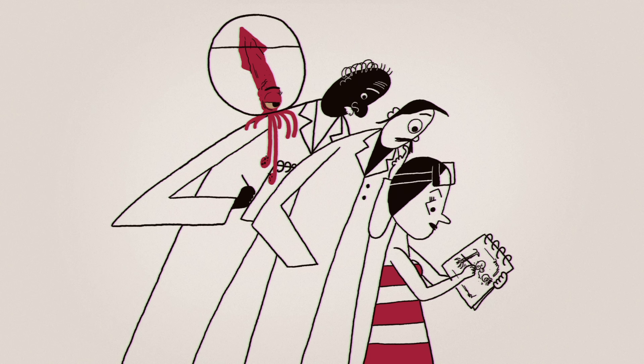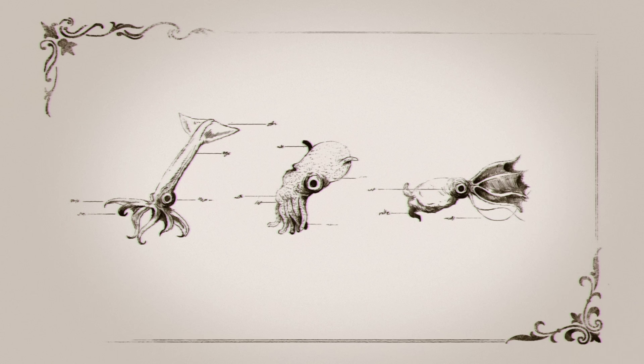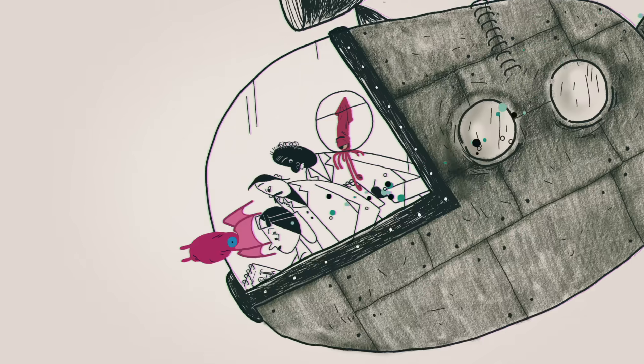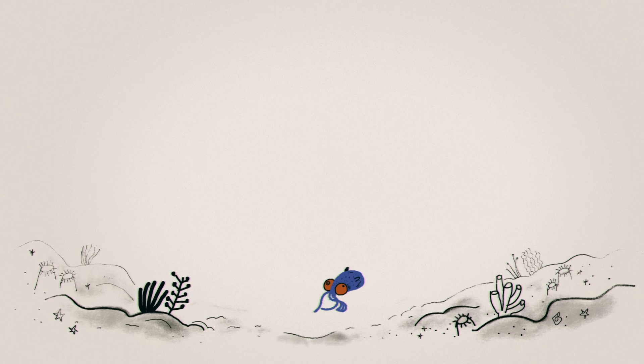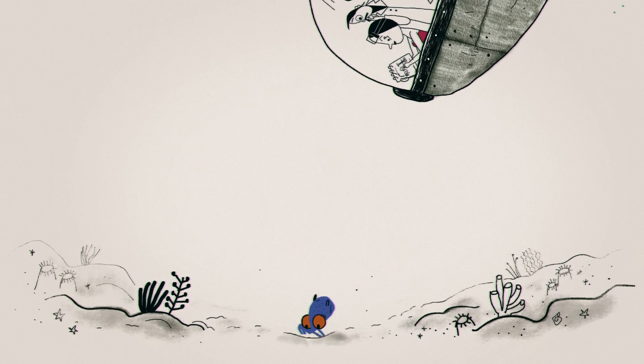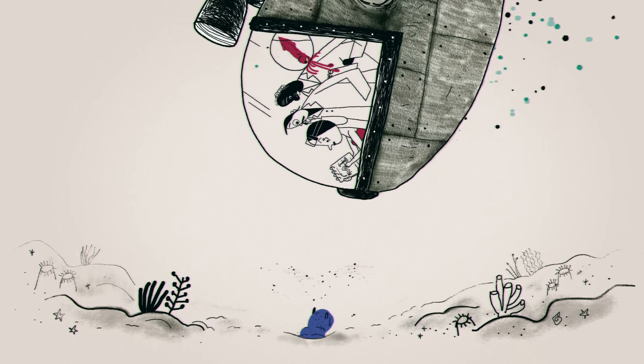Some squid species have also developed unique adaptive behaviors. The deep-sea vampire squid, when startled, uses its webbed arms to make a cape it hides behind. The tiny bobtail, on the other hand, tosses sand over its body as it burrows away from prying eyes.